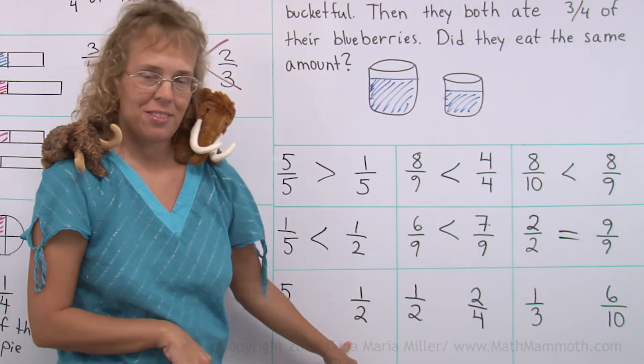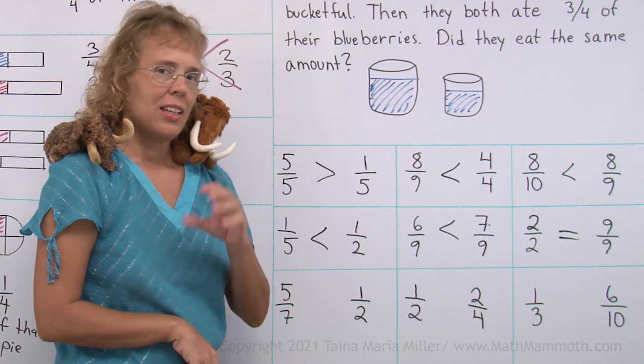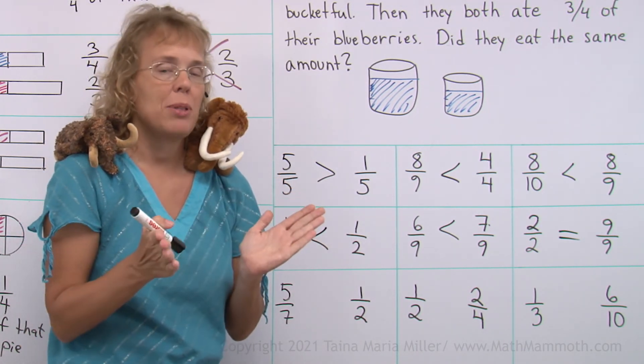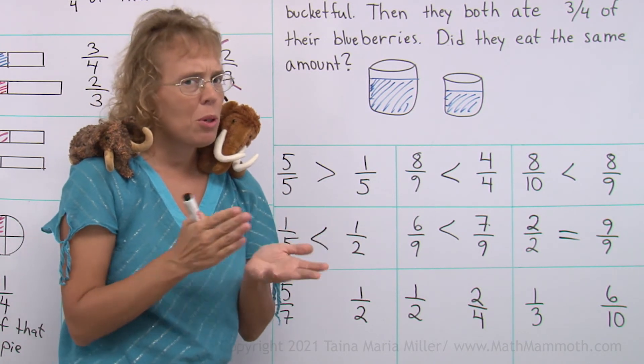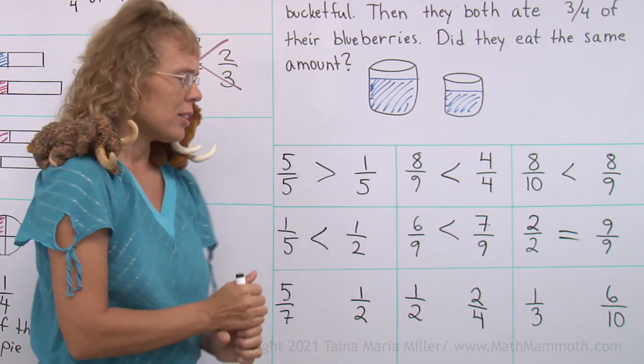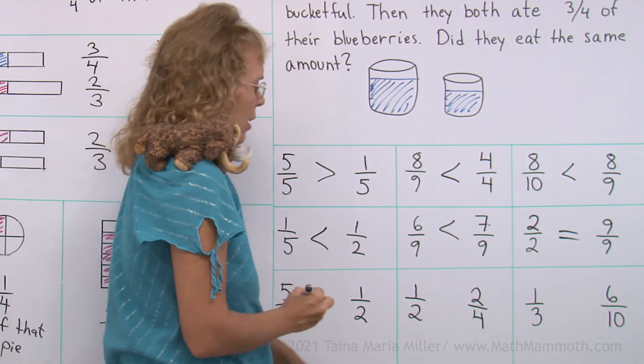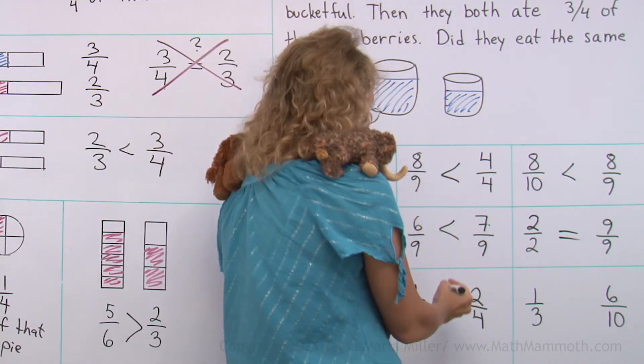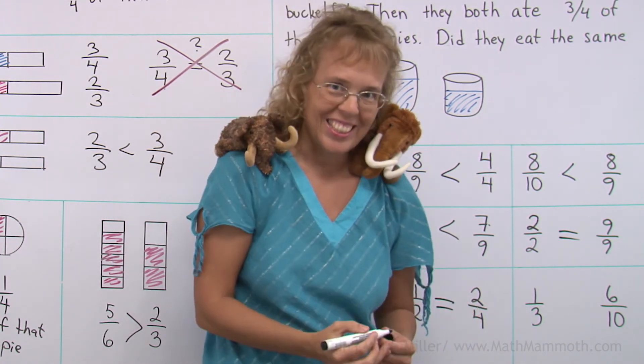Five-sevenths and one-half. Imagine if you have something divided into seven pieces and you take five pieces. That's more than one-half, isn't it? I hope you can see that. One-half and two-fourths. Giganto knows the answer. Correct! These are equal.